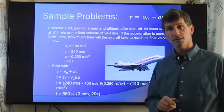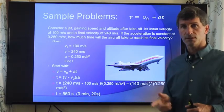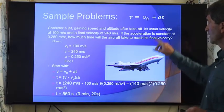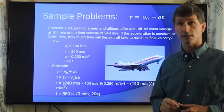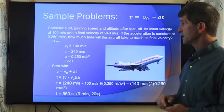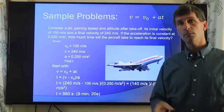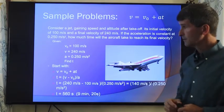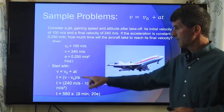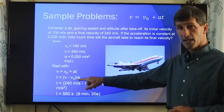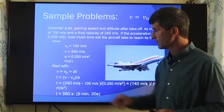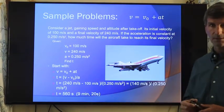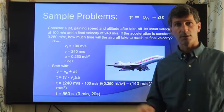Another example. First, we didn't know the final velocity. Then we didn't know the acceleration. Now we're going to try to find time. Consider a jet gaining speed and altitude after takeoff. Its initial velocity is 100 meters per second. It's lifting off the ground, it's 100 meters per second. Its final velocity is 240 meters per second. Assume constant acceleration. Acceleration constant at 1 quarter of a meter per second squared. I know this, I know this, I know this. Solve for t. So here's our original equation. We solve for t. How do we do that? We subtract v₀ from both sides. We then divide by acceleration. Plug in the numbers. This will take 560 seconds or 9 minutes and 20 seconds to reach cruising altitude.